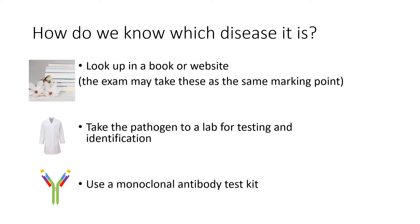How do we know what disease it is? There are three main ways we can research this. Number one, we simply look up the symptoms in a book or website — and importantly, looking up in a book and looking up on a website count as the same point in an exam. So if asked for two ways, don't use both of those. Number two, take the pathogen to a lab for testing and identification, using a DNA sequence for example. Number three, we could use a monoclonal antibody test.